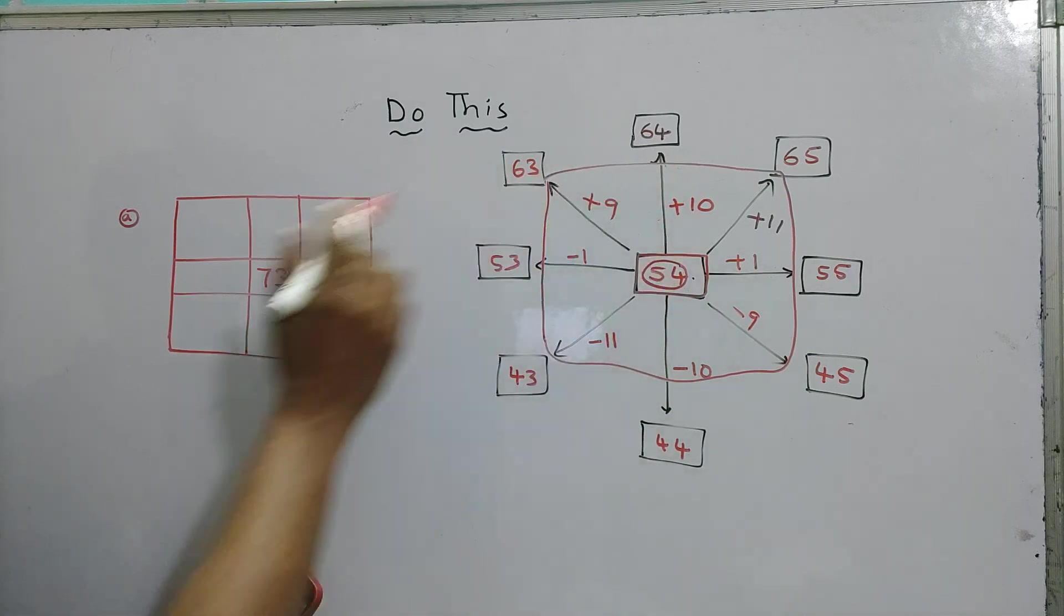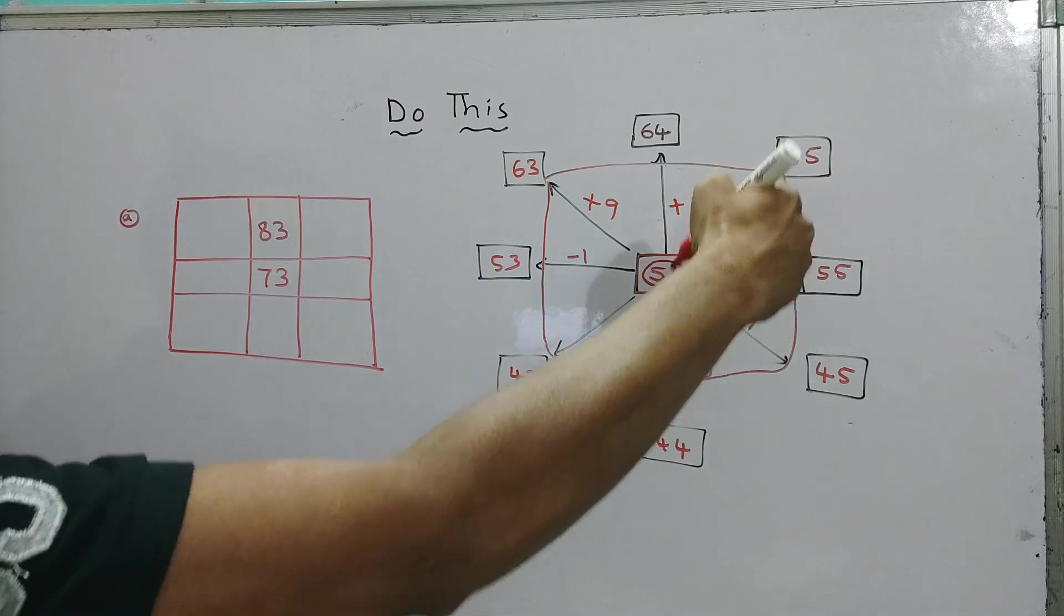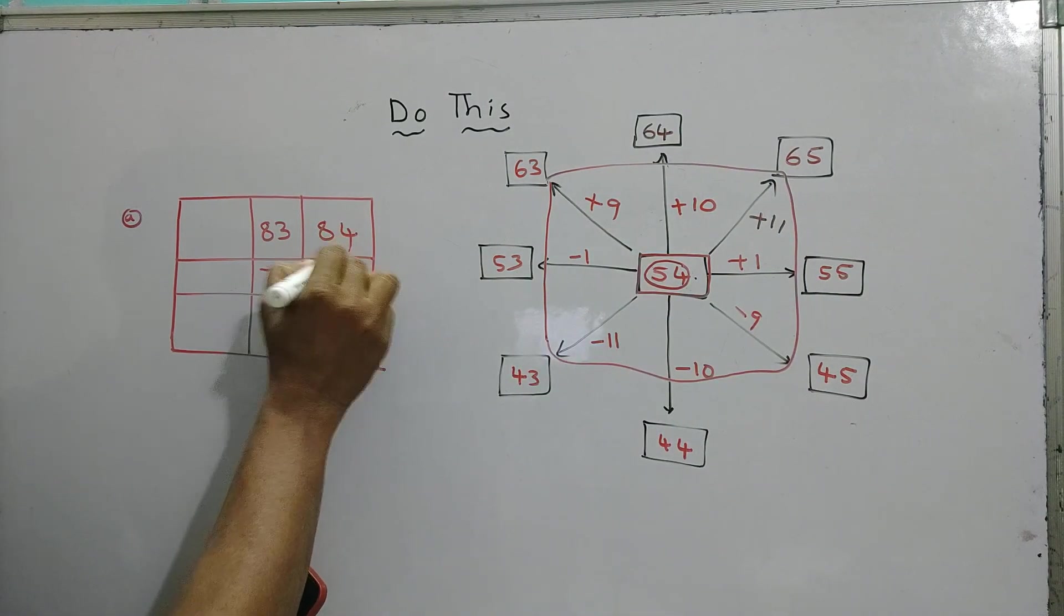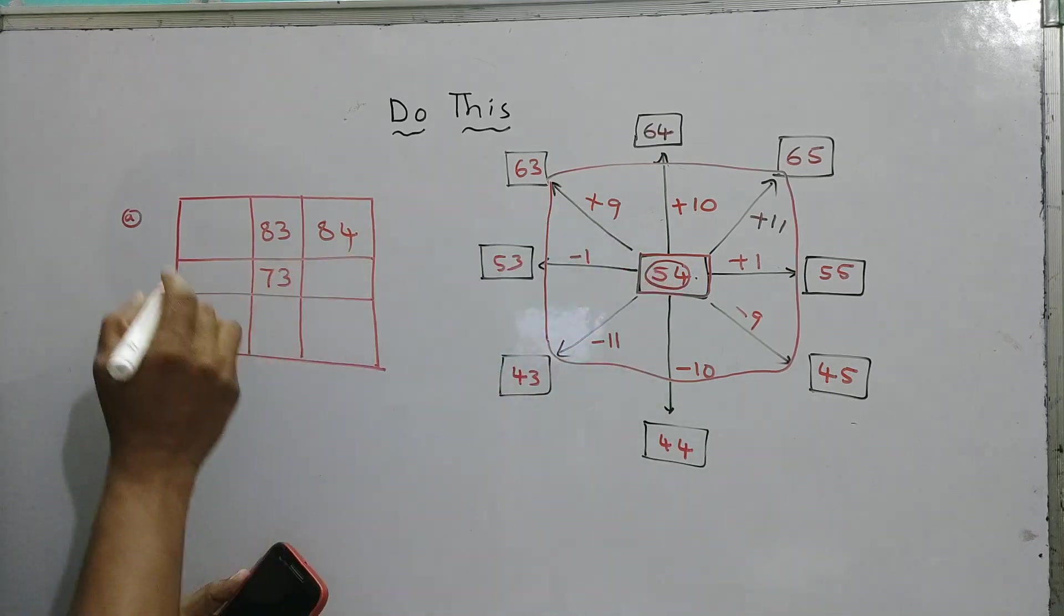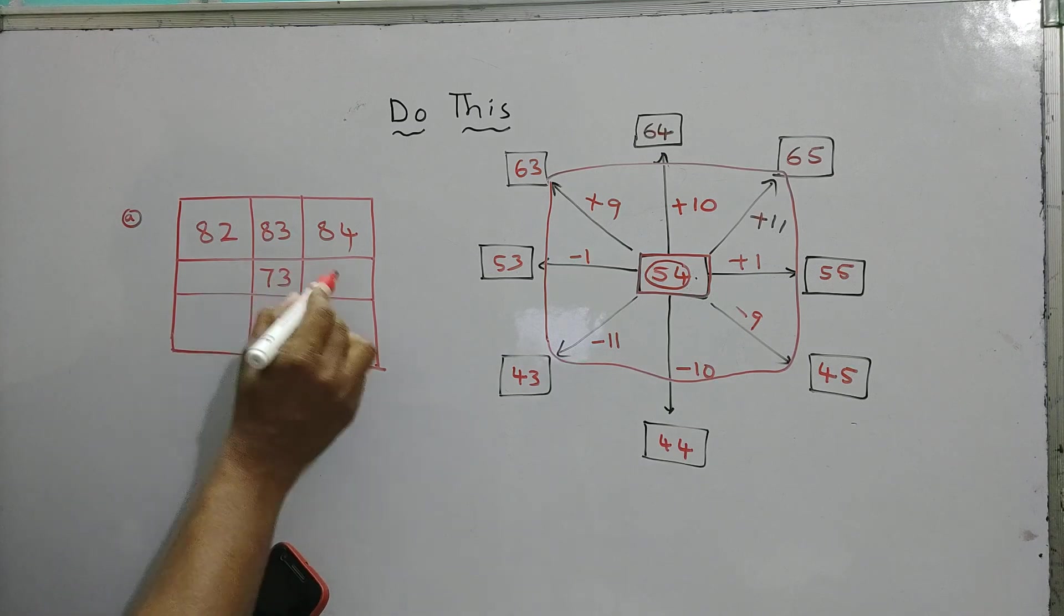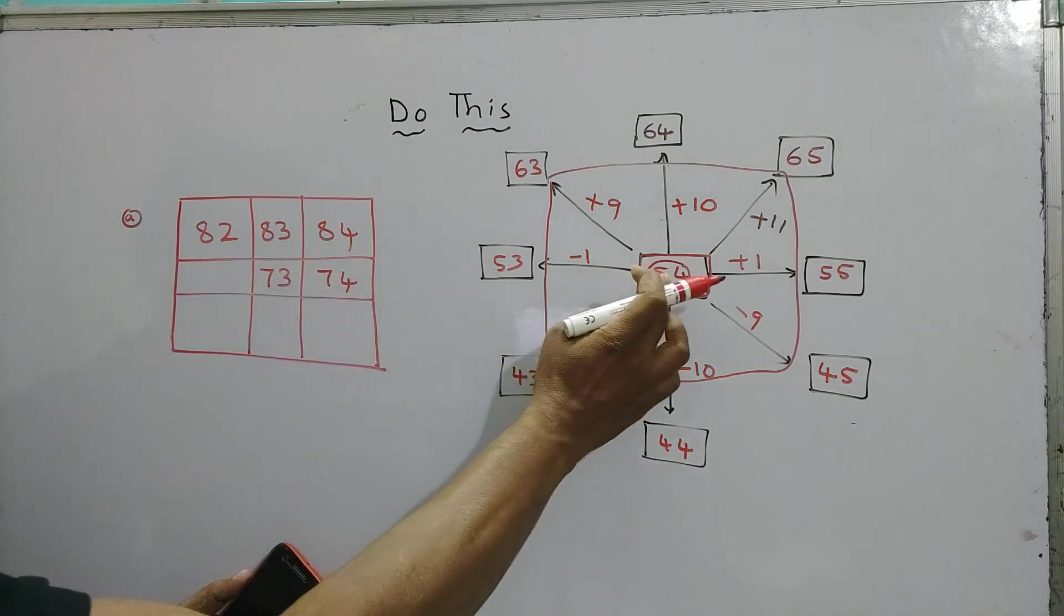Plus 10, so here it is 83. Plus 11, 54 plus 11, like that 73 plus 11 is 84. 54 plus 9 was 82. See 73 plus 9. Here plus 1 is 74. 73 plus 1 is 74. Same like that.